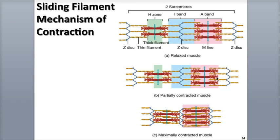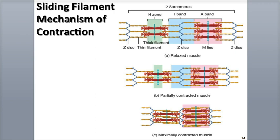Then as the muscle fibers shorten, they pull on their surrounding connective tissue layers — the endomysium, the perimysium, and the epimysium — and the tendons, which generates tension that pulls on the bones they are attached to.